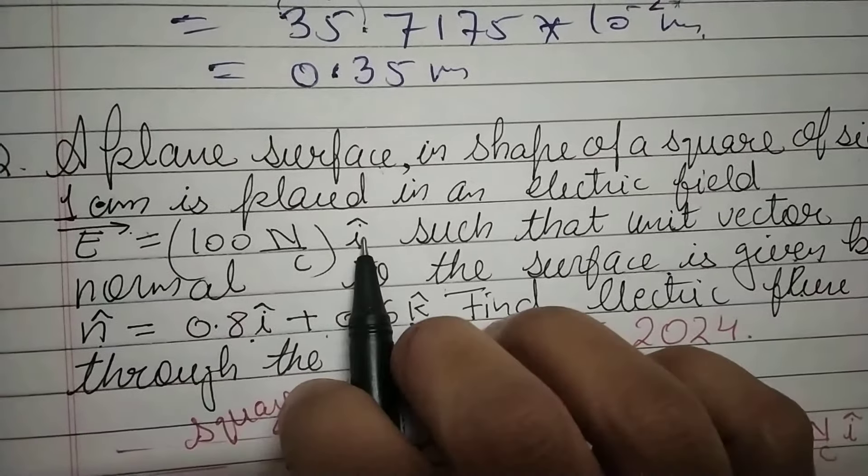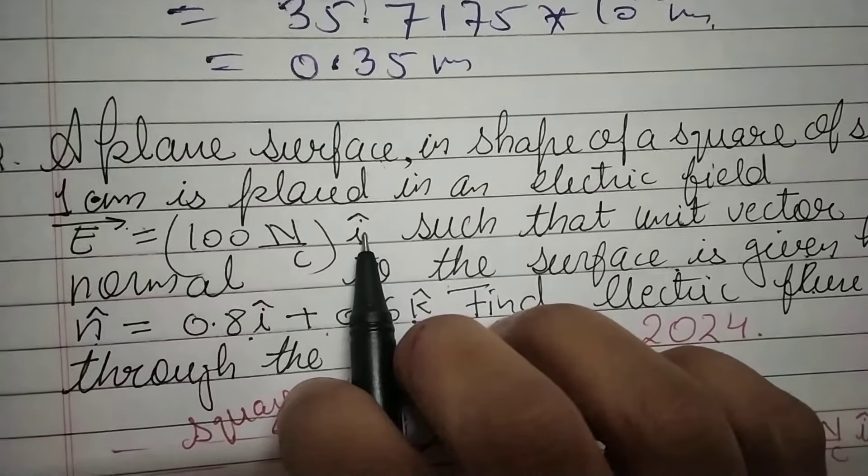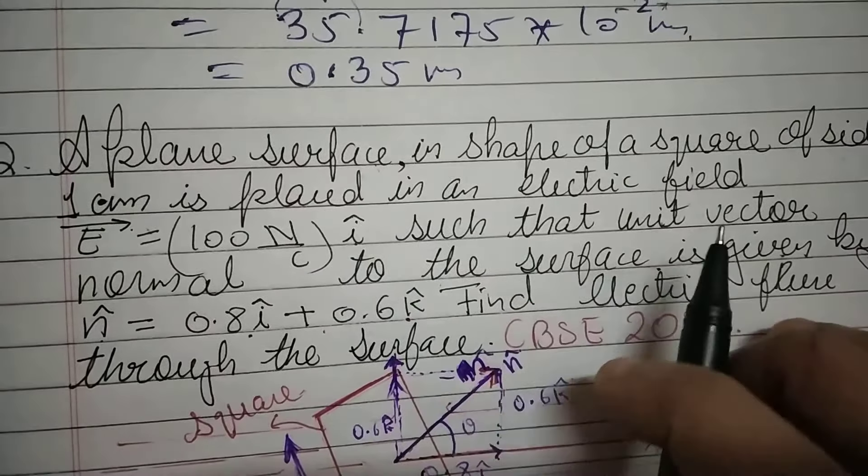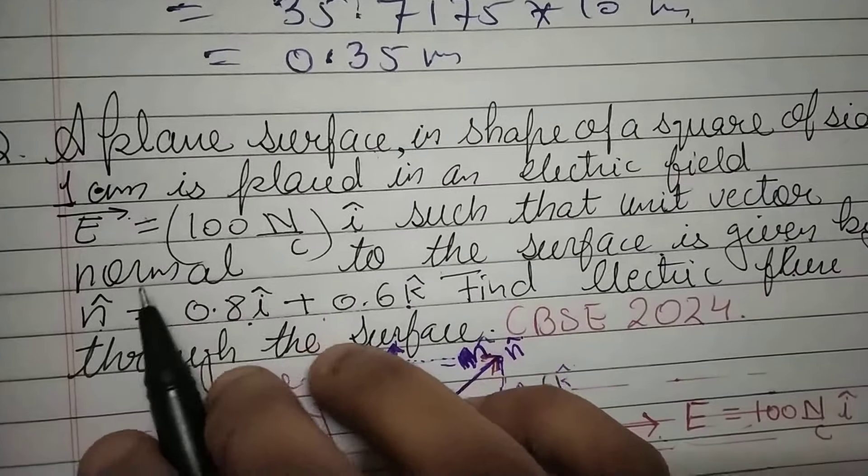Good evening students. Next question: a plane surface in the shape of a square of side one centimeter is placed in an electric field E in the i-direction. The unit vector normal to the surface is given. Find the electric flux. I have made a diagram for this.